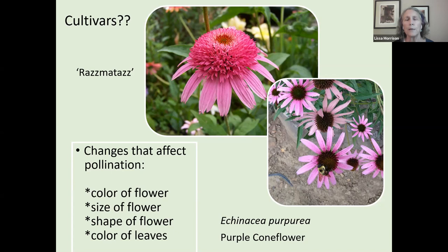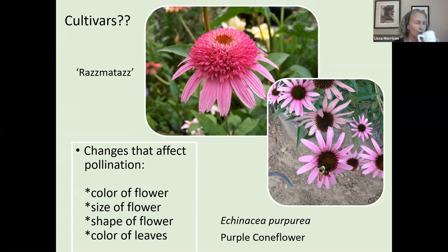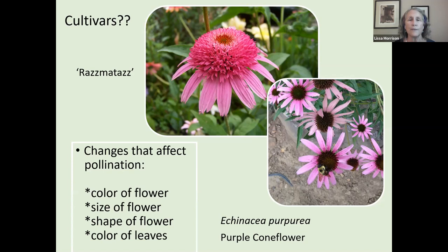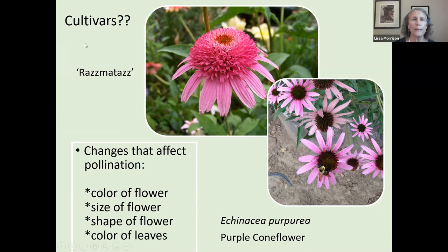The native purple coneflower supports all kinds of bees and butterflies and is a classic pollinator garden plant. But the Razzmatazz has been cultivated — manipulated by man — so that it no longer looks like the native plant. If you go to a garden center where cultivars are mostly sold, look up what the native plant looks like first; the more the cultivar resembles the native, the better. The Razzmatazz supports very few or no pollinators.